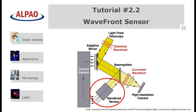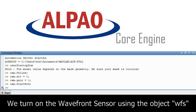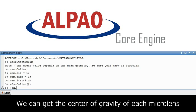Next we will look at the wavefront sensor. We turn on the wavefront sensor by typing WFS ONLINE. We can get the center of gravity for each microlens and then plot it.